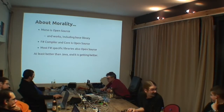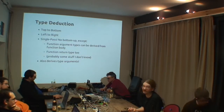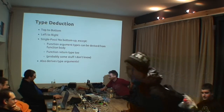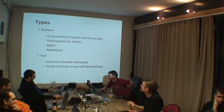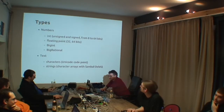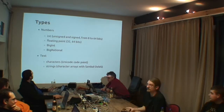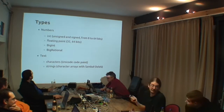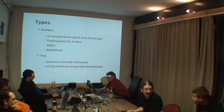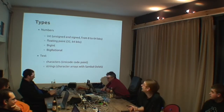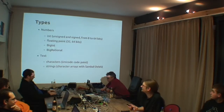On numbers: we have an arbitrary precision integer — BigInt — and an arbitrary precision rational — BigRational. The default integer is not BigInt by default, but BigInt is available. BigRational uses a syntax where you write an integer with an `N` suffix, a slash for division, and another integer with an `N` suffix, giving you an arbitrary precision rational. This is great for people coming from pure functional languages who want that.